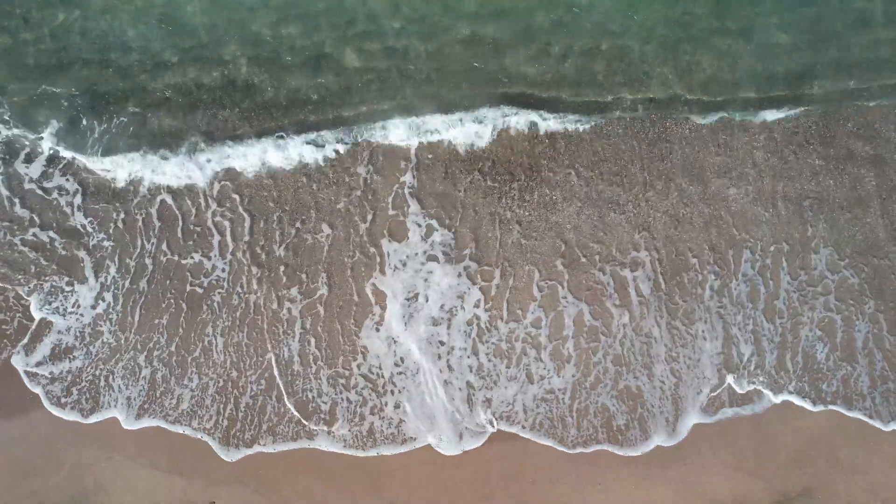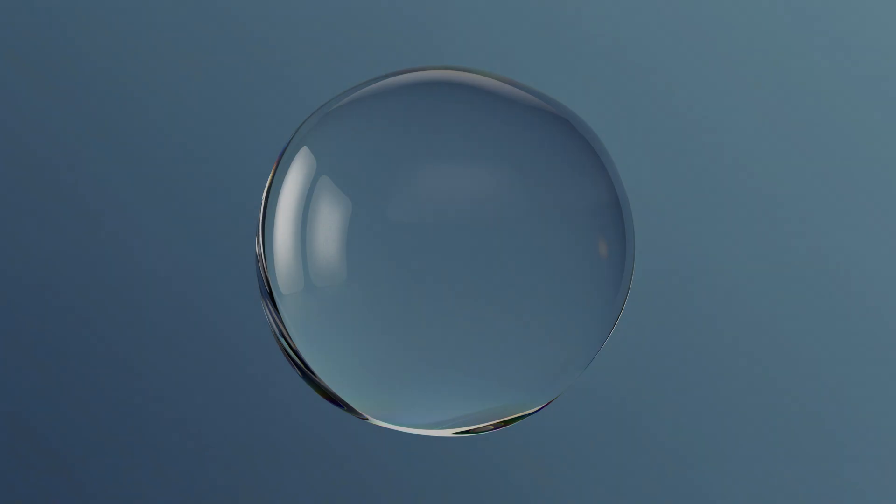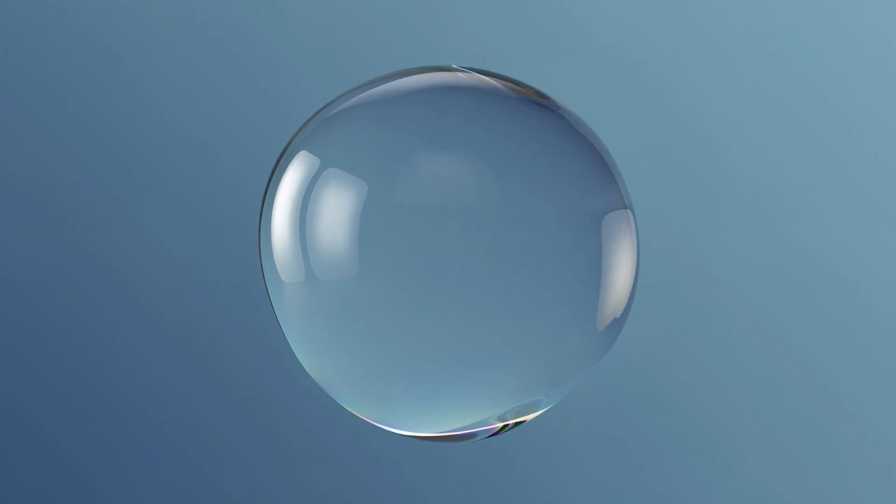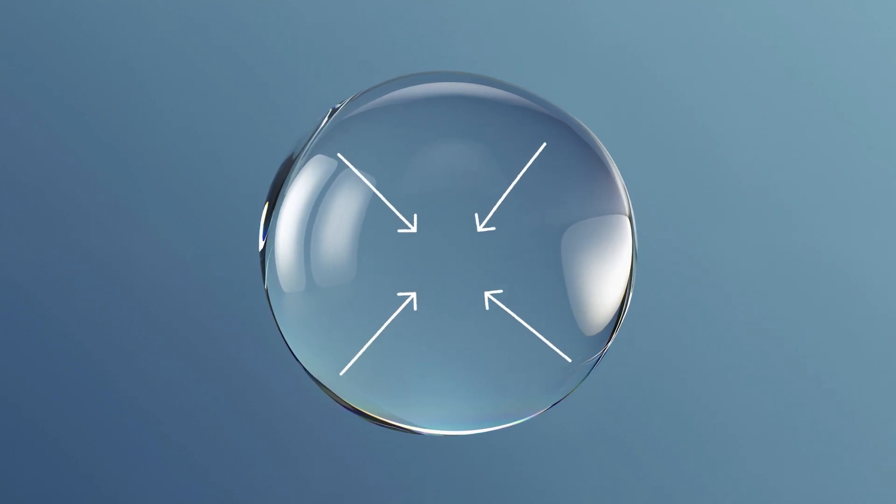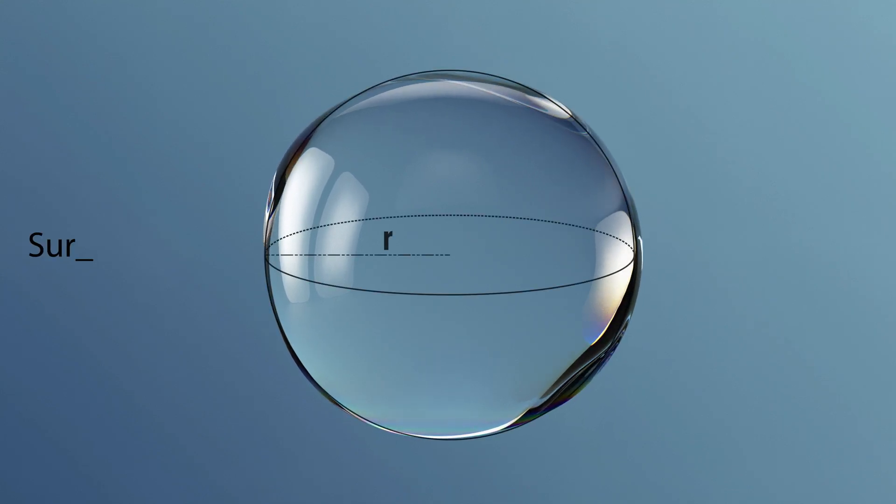But what would happen to this balance if we were to remove gravity from the equation? In environments with little to no gravity, such as space, even larger bodies of water would form into spherical shapes due to the cohesive force between the surface molecules. The reason water seeks to form this shape is because the sphere provides the smallest surface area for any given volume.